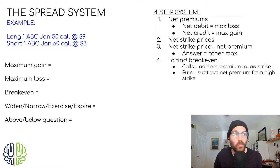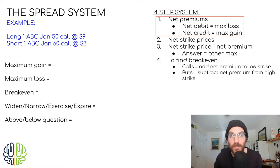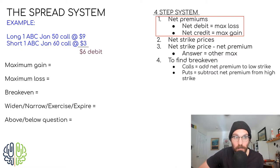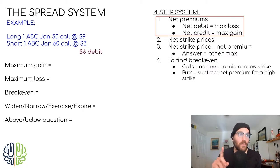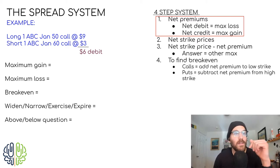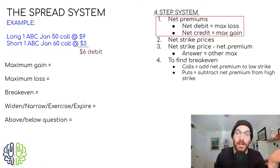Step number one: we're going to net out our premiums, meaning we look at what we bought and what we sold to figure out the overall amount of money we're either making or spending when we start this option strategy. Here, we bought the call for nine and sold the call for three. That is an overall debit of six per share, or $600 overall. Here's the good news about the system: if you end up with a net debit, that is your maximum loss, which is what we have — a $600 debit. So this is our maximum loss, $600.